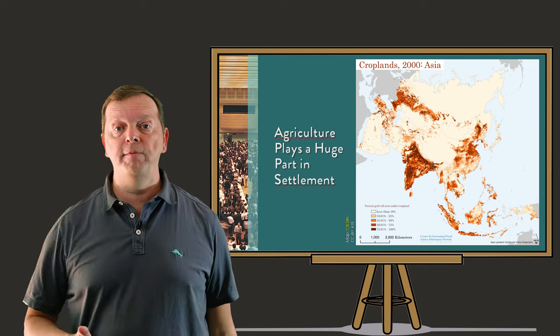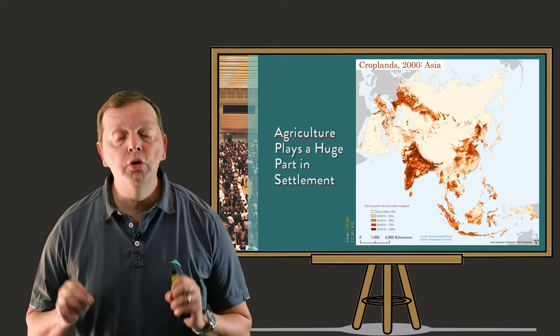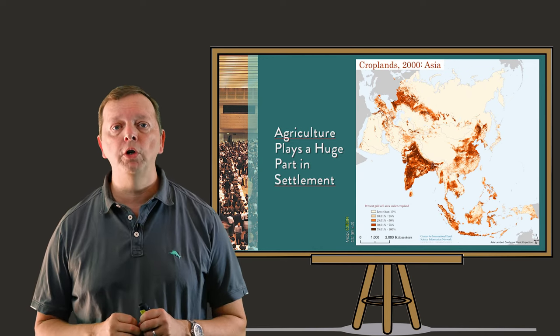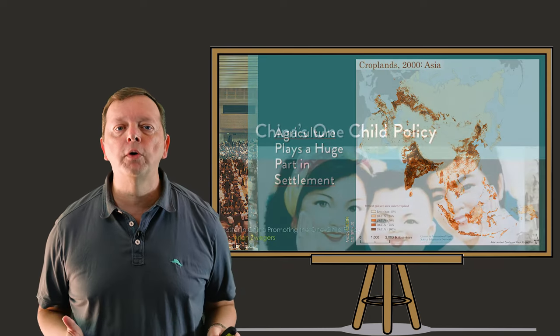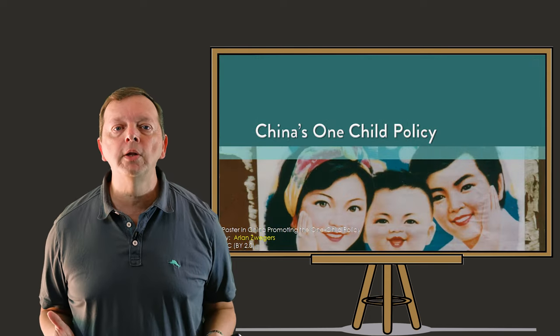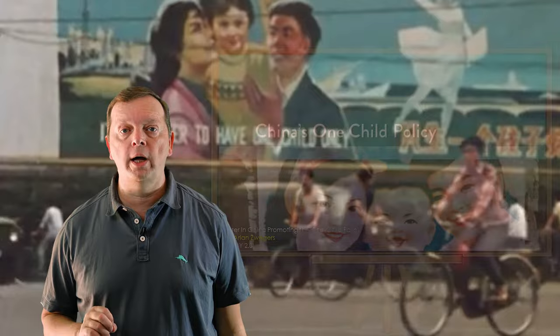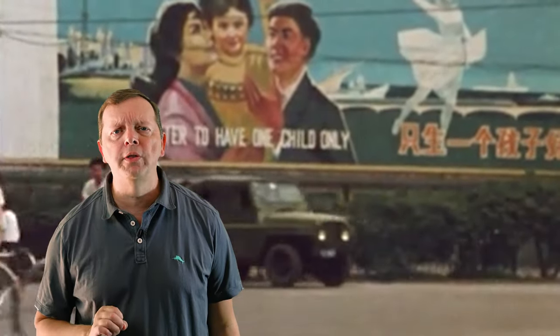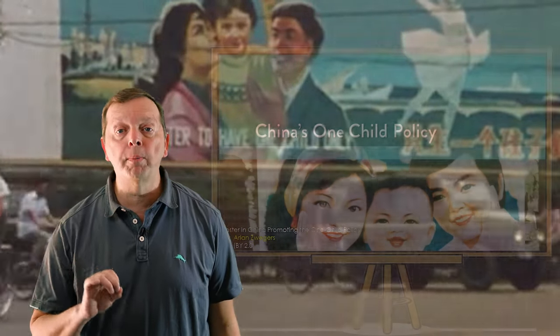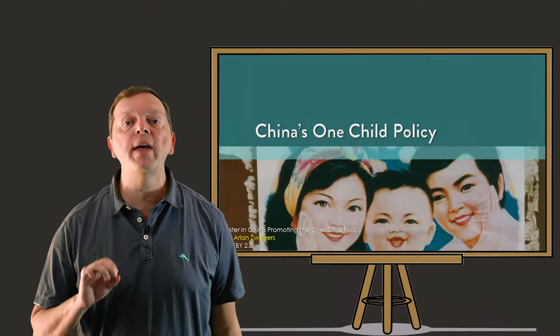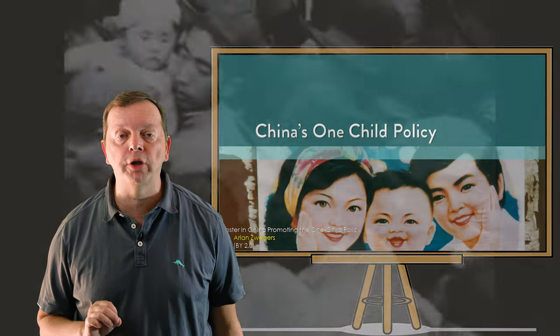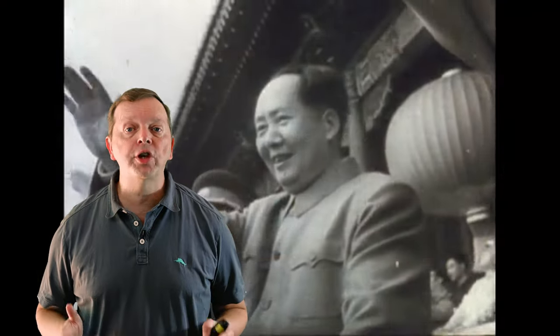Now, if you don't have much food, you're not going to have very many people. But you do have lots of people in China. One of the most controversial policies that China enacted was something called the One Child Policy. But before this policy, there were other policies in China that had an impact upon the population. After the Chinese nationalists were driven to Taiwan, Mao Zedong and the communists took over in China.